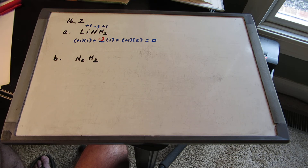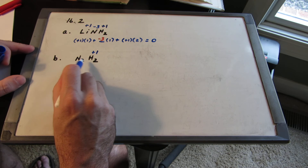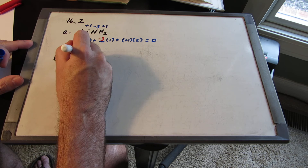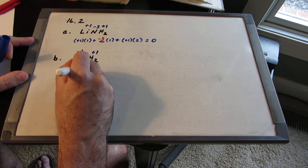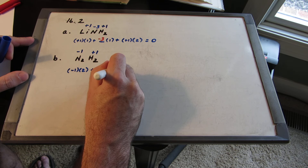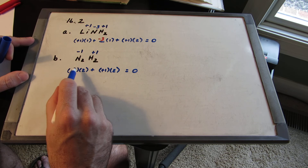Part B: N2H2. We have a rule for hydrogen — rule 5B, it's plus one. For nitrogen it's going to be minus one. Adding them up: negative one on nitrogen times two, plus plus one on hydrogen times two hydrogen atoms, has to equal the charge which is zero. Negative two plus two is zero. That checks out.